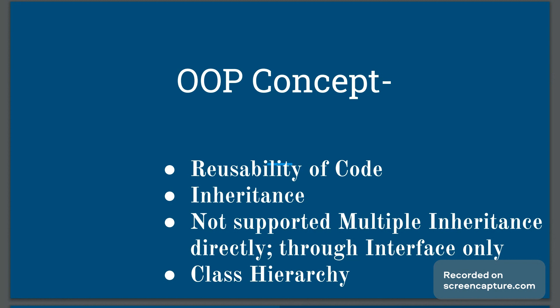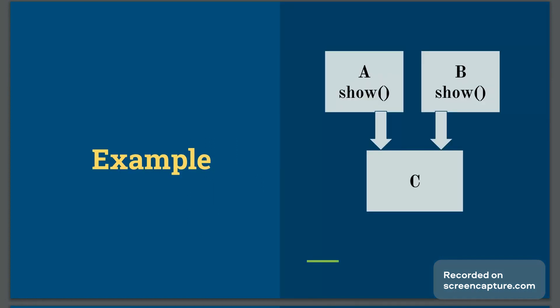If there are multiple classes in our program and classes are accessing properties of different classes in their own class according to their relationship, there are five types of inheritance: single, multi-level, hierarchical, multiple, and hybrid. Consider an example of multiple inheritance where one class is derived from more than one base class.